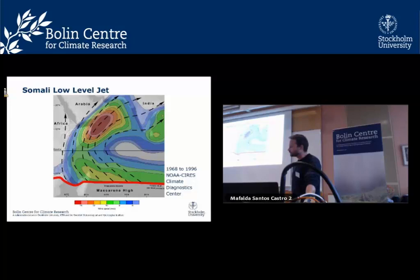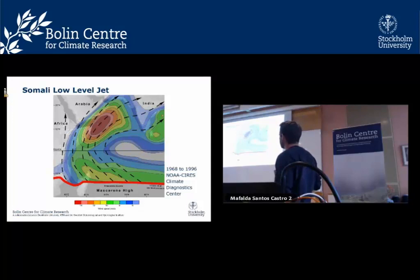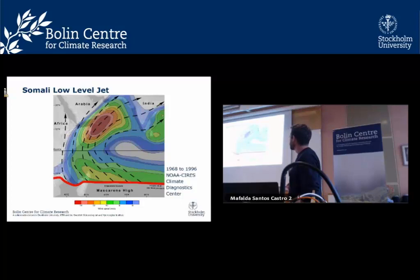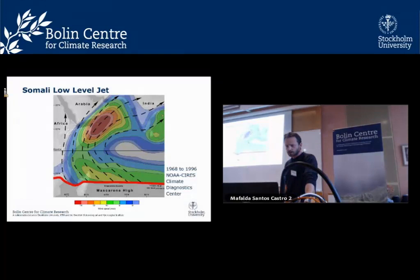The Somali low-level jet originates in the southern hemisphere east of Madagascar. A high-pressure system moves counterclockwise, then moves west, hits the East African coastline, gets channeled and deflected by the mountains, and flows northward past Arabia. The Oman mountains lie along this path, and the jet progresses into India by June–August, producing a lot of precipitation. It's a very narrow zone — these colors represent wind speeds of 10 meters per second or greater — traveling about 1.5 kilometers above sea level.